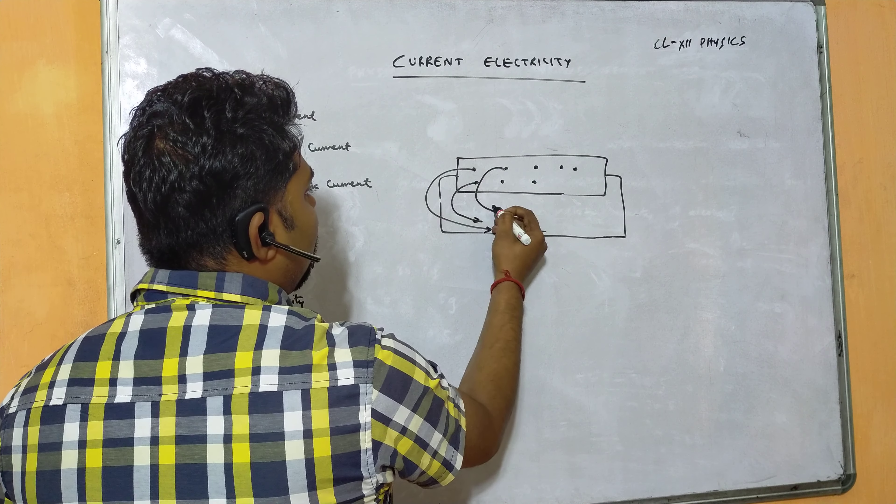Drift velocity per unit electric field is called mobility, denoted by μ. Electrons have much greater mobility compared to positive charges because they are lighter. Mobility also depends on the mass of the particle and the applied electric field. So μ = Vd / E.